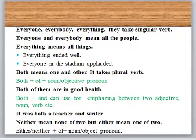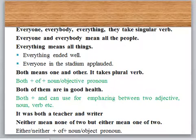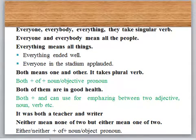'Everyone,' 'everybody,' and 'everything' all take a singular verb. 'Everyone' and 'everybody' mean all the people; 'everything' means all the things. For example: 'Everything ended well.' 'Everyone in the stadium applauded.' 'Both' means one and the other — it refers to two things and takes a plural verb, because 'both' points out two things, making it plural.